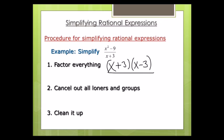On the bottom, I can't factor x plus 3 — can't do GCF, can't do difference of two squares, can't do difference of two cubes. It's two terms, so I can't use slide divide, so I'm just going to leave that as x plus 3. Step number two: cancel out all loners and groups. A loner is something like 2x squared y — that's made up of a bunch of loners. The difference between a loner and a group: a group has plus and minus signs in it. So x plus 3 is a group, x minus 3 is a group.